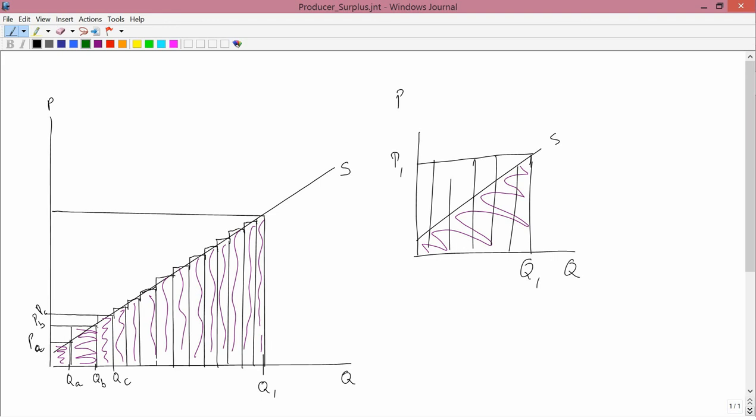And that bonus is the area bounded by these circles. Not those circles. These circles. Different color. Okay, so it's the excess over the amount of money that they'd enjoy, this big rectangle, when they only have to face one price, versus the smaller amount that they'd be willing to accept in order to produce Q1. So the excess is this. And that's producer surplus.